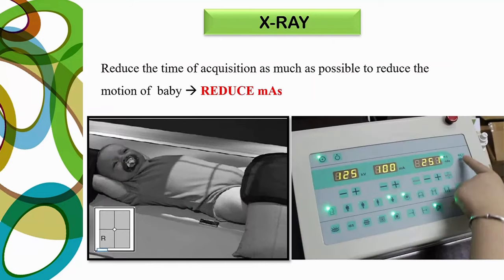Reduce the time of acquisition as much as possible to minimize motion of the baby. You should reduce the mAs by using a higher mA station. This will help reduce motion artifacts during pediatric imaging.